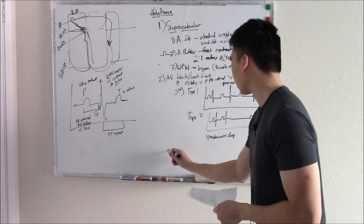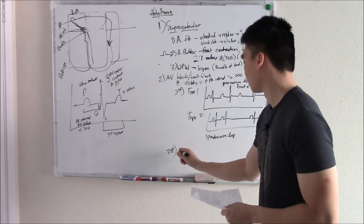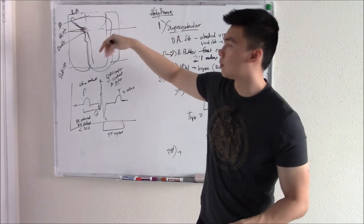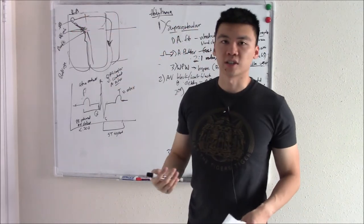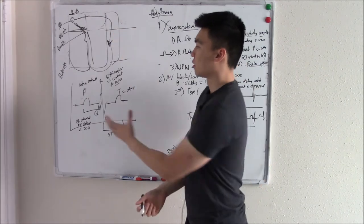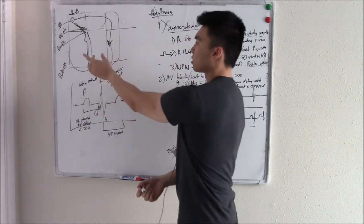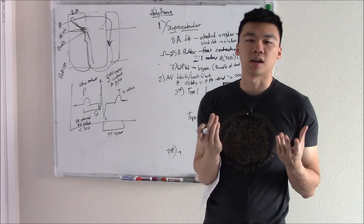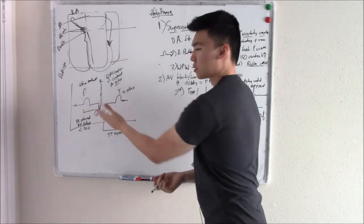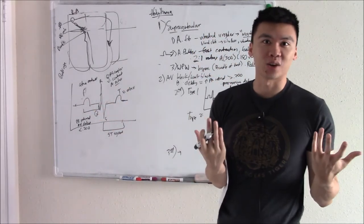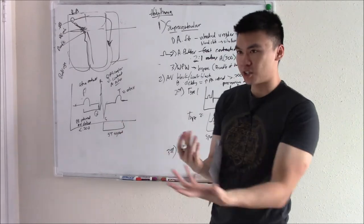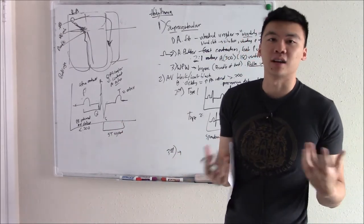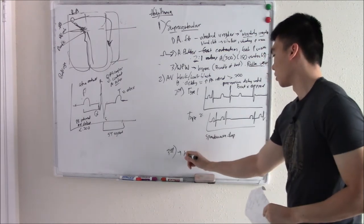Third degree heart block is when the signal is so messed up there is no communication at all between the atria and ventricles. Your atria are contracting — generating P waves — and your ventricles are contracting — generating QRS complexes — but they have no relation to each other. They're not communicating, so the waves are completely out of order. It just looks like mayhem.